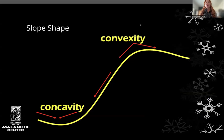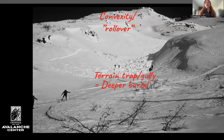Slope shape — you have convexities and concavities. Convexities create stress as the slab is bent over that roll, creating a very common avalanche starting zone. Concavities create a terrain trap where snow traveling down the slope has increased deposition, resulting in deeper burial. In this photo, you can see the starting zone up on the rollover convexity, and as the avalanche travels down, it terminates in the terrain trap gully — resulting in a deeper burial. You can see how deep it is by the two small people standing on the debris.